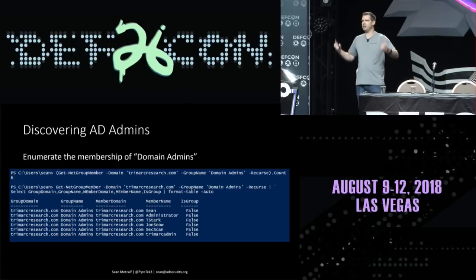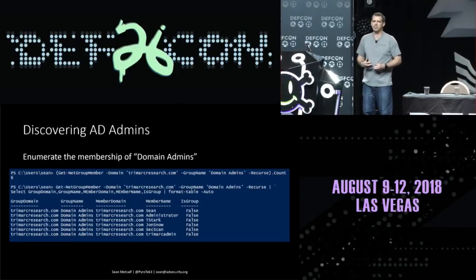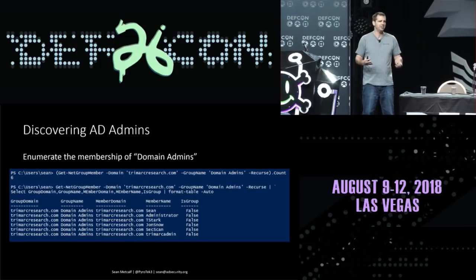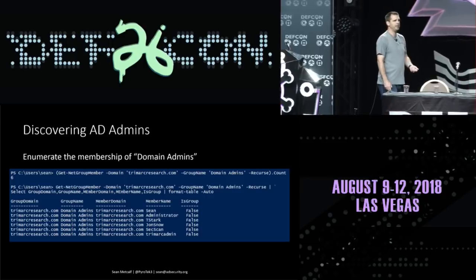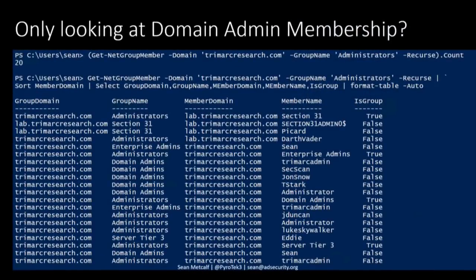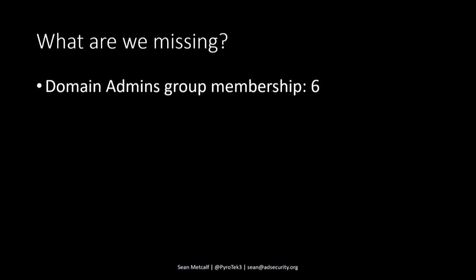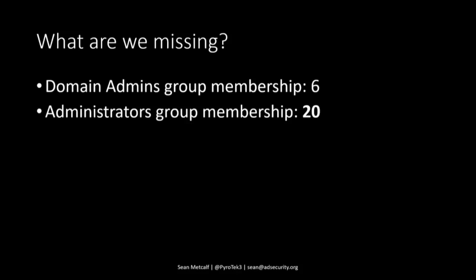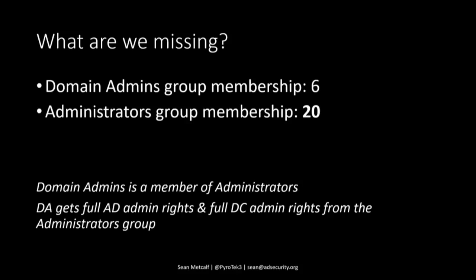So the evolution of admin discovery: we look for domain admins. We run a command like get-net-group-member — thank you Will Harmjoy for giving us PowerView — and enumerate the members of domain admins. But a lot of times pen testers and red teamers forget about the administrators group. If we're just looking at domain admins, we're going to miss a ton of Active Directory administrators.